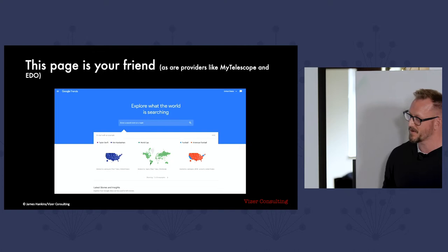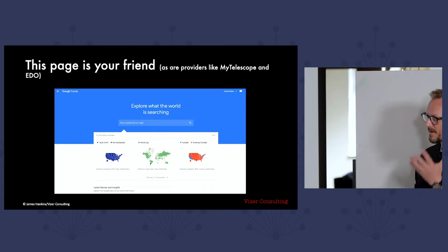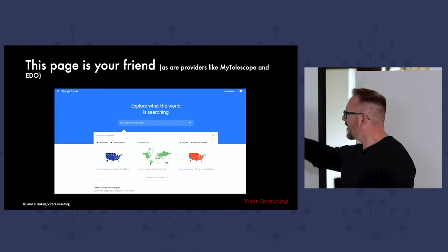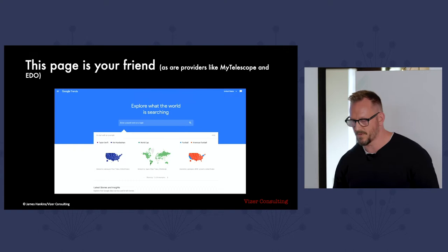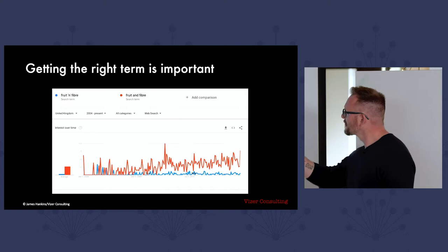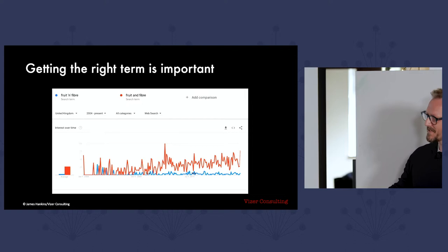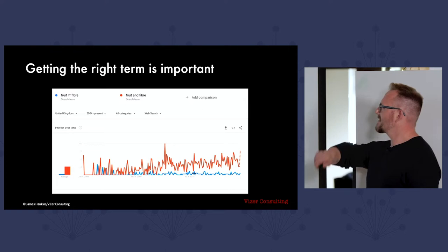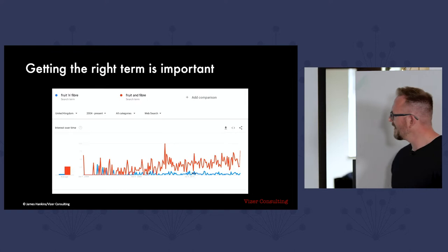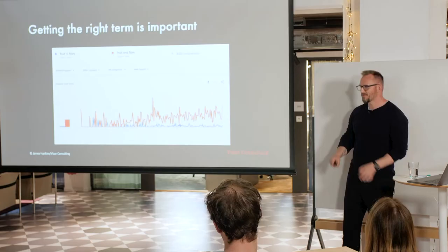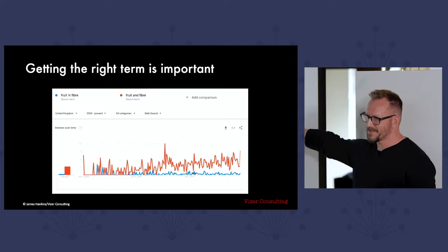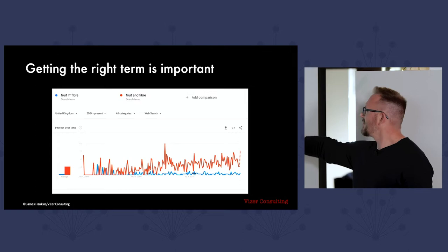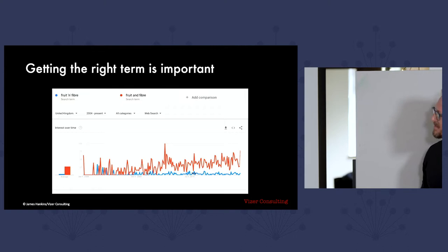There are other providers such as My Telescope and EDO globally who automate the capability that you can get out of this simple tool — because there are restrictions to using it. For example, it can only take five brands at any one point. Getting the right term is really important, and this is actually where search planners are very useful, because they understand what people put into the search engine. For example, the brand term for Kellogg's Fruit & Fibre — consumers don't actually type in 'fruit and fiber', they type 'fruit and fibre.' And if you do the validation analysis against market share, you'll find that 'fruit and fibre' is the term more closely correlated with market share. So it's important to understand the term that consumers are using relative to your product.